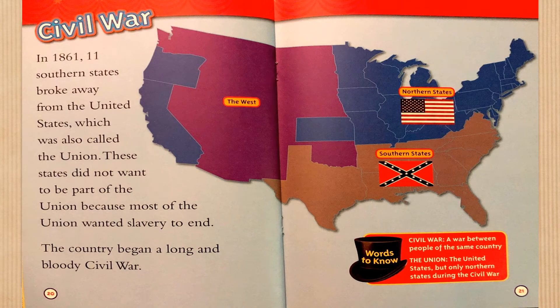Civil War. In 1861, 11 southern states broke away from the United States, which was also called the Union. These states did not want to be part of the Union because most of the Union wanted slavery to end. The country began a long and bloody civil war. Civil War is a war between people of the same country. The Union refers to the United States, but only the northern states during the Civil War. We can see on the United States map the northern states, southern states, and the west.